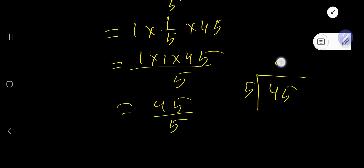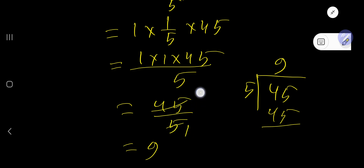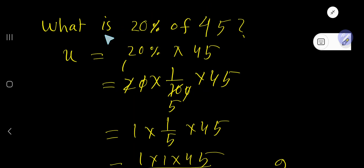If you divide 45 by 5, you get 9 — because 9 times 5 is 45. 5 goes into 5 one time, 5 goes into 45 nine times. So the answer is 9. 9 is 20 percent of 45.